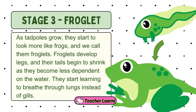Stage 3 – The Froglet. As tadpoles grow, they start to look more like frogs, and we call them froglets. Froglets develop legs, and their tails begin to shrink as they become less dependent on the water. They start learning to breathe through lungs instead of gills.